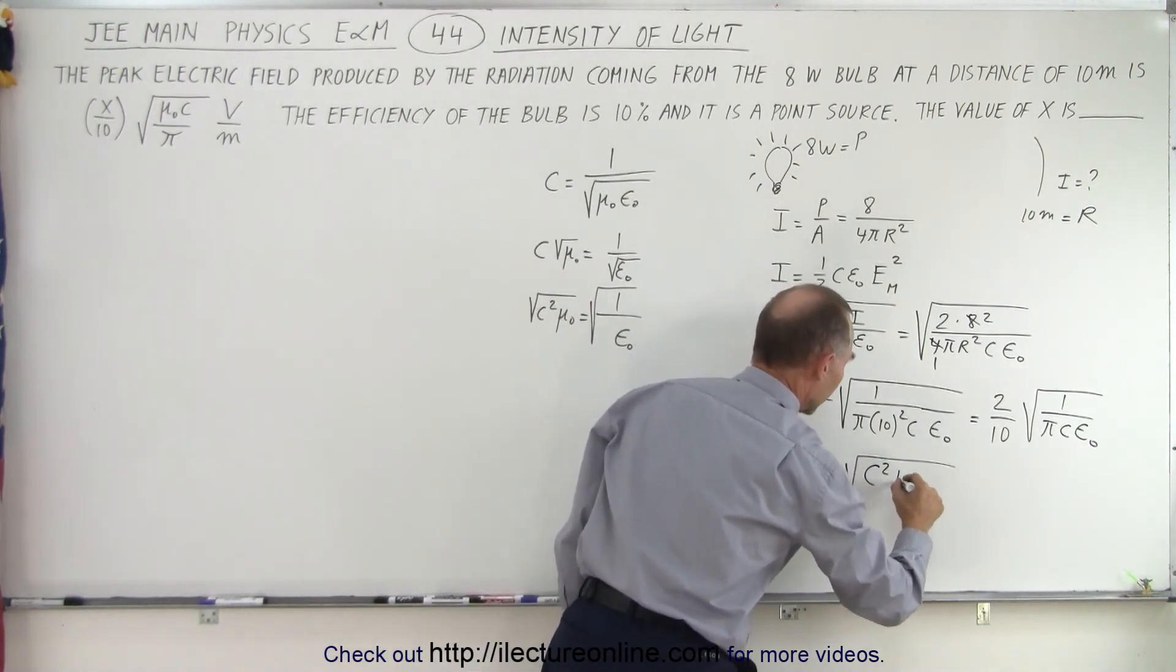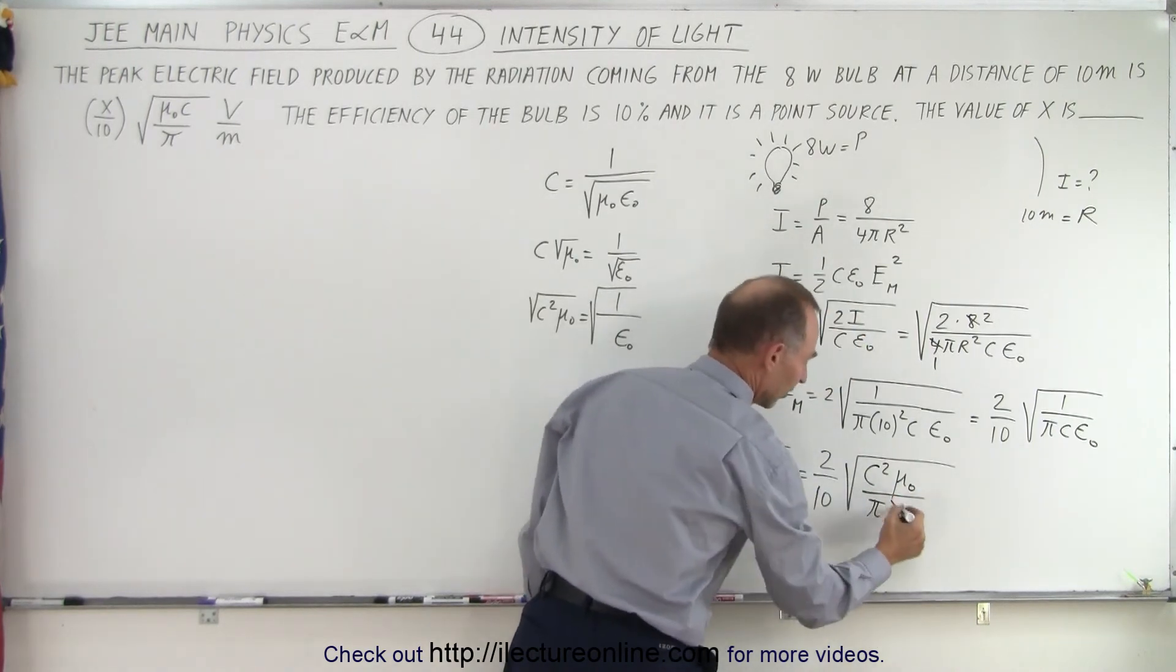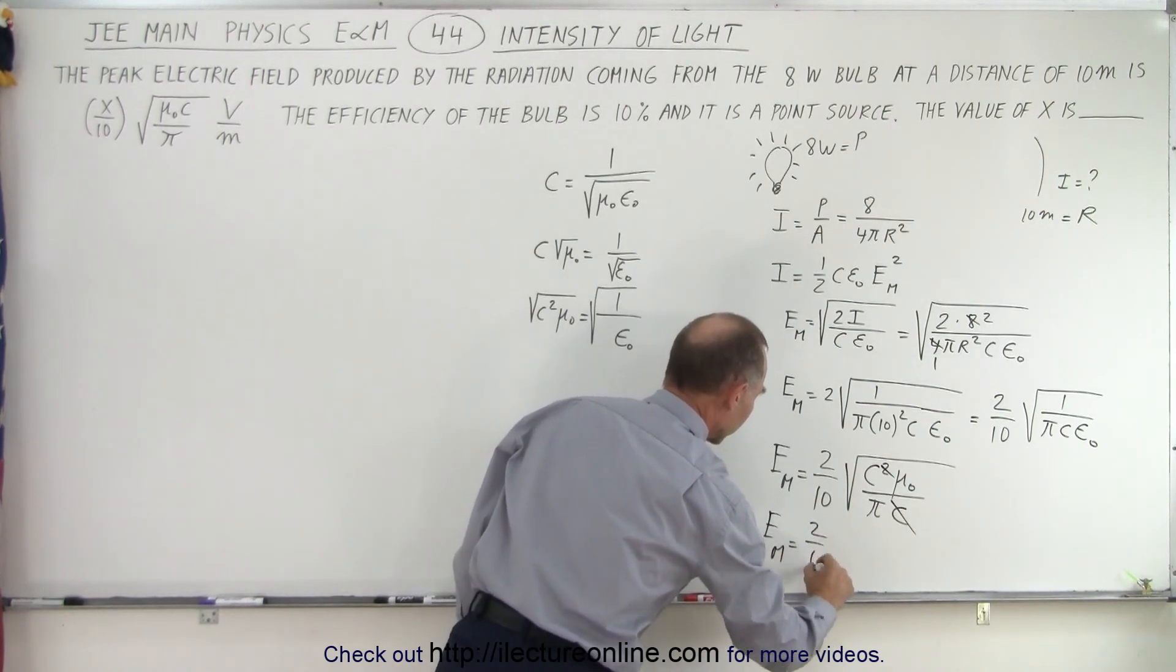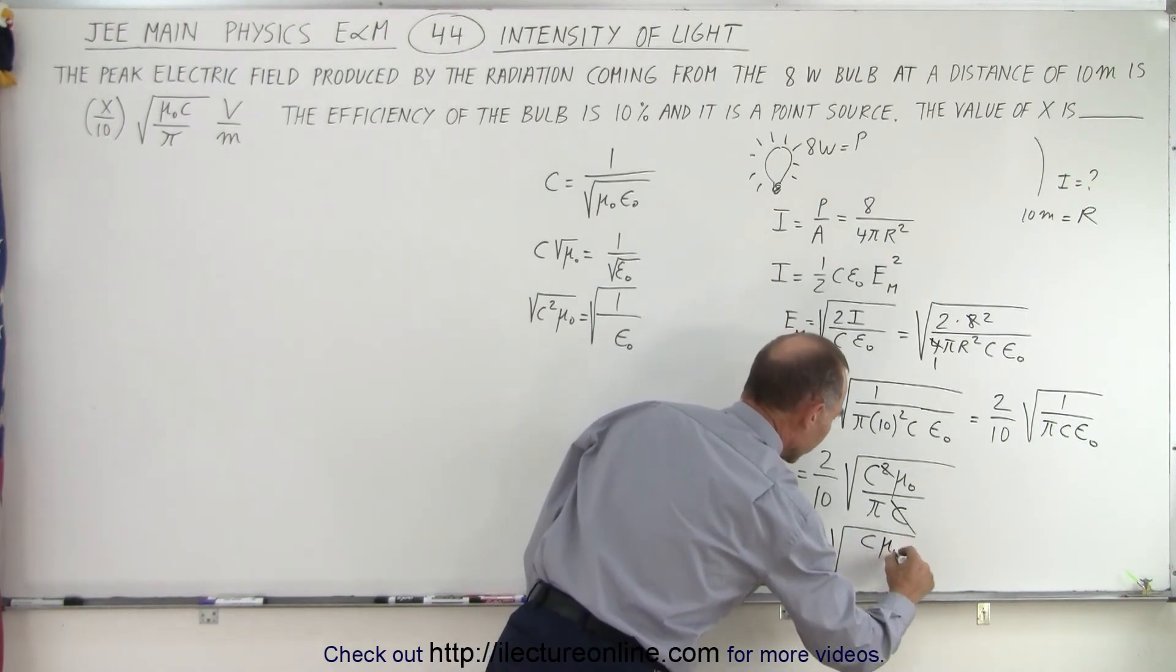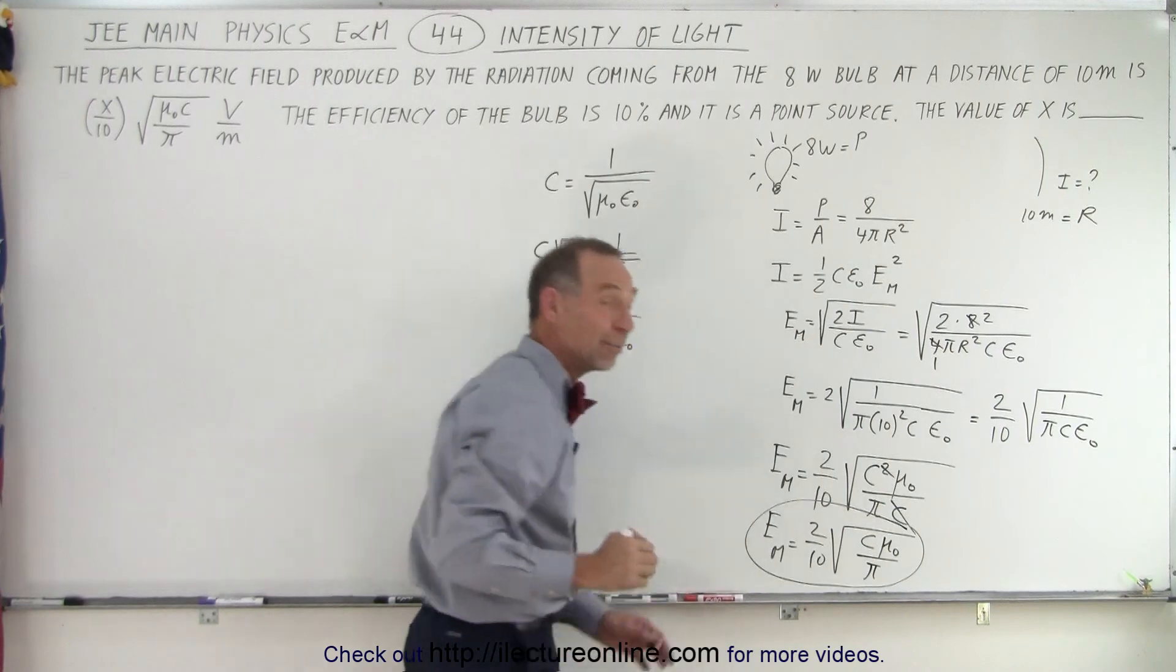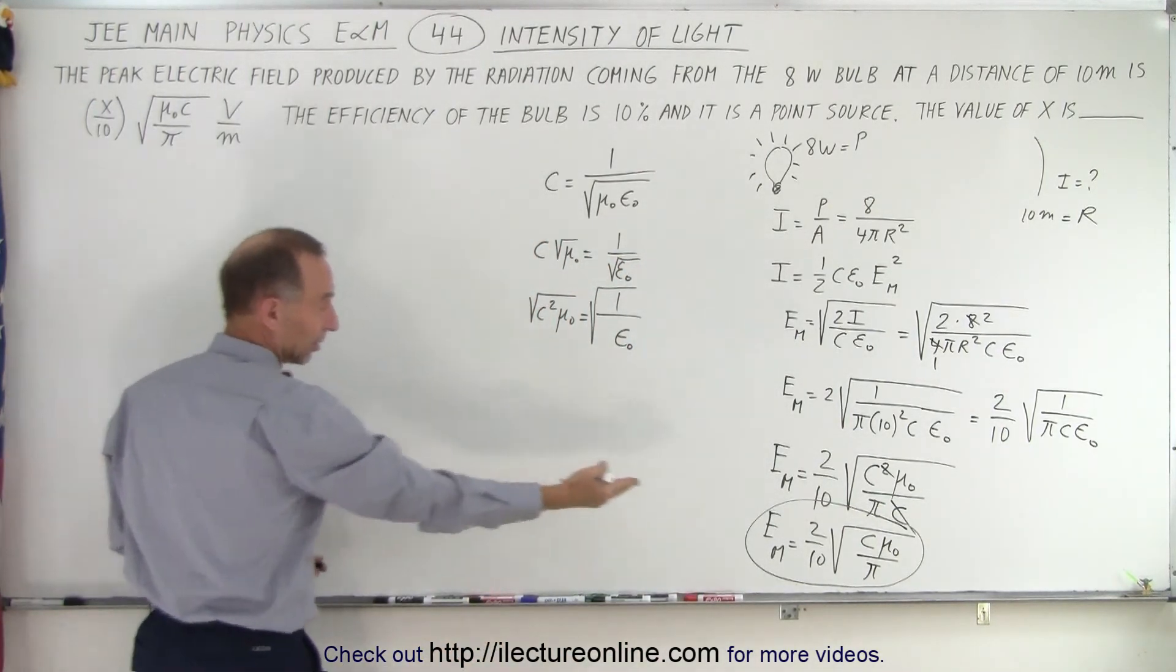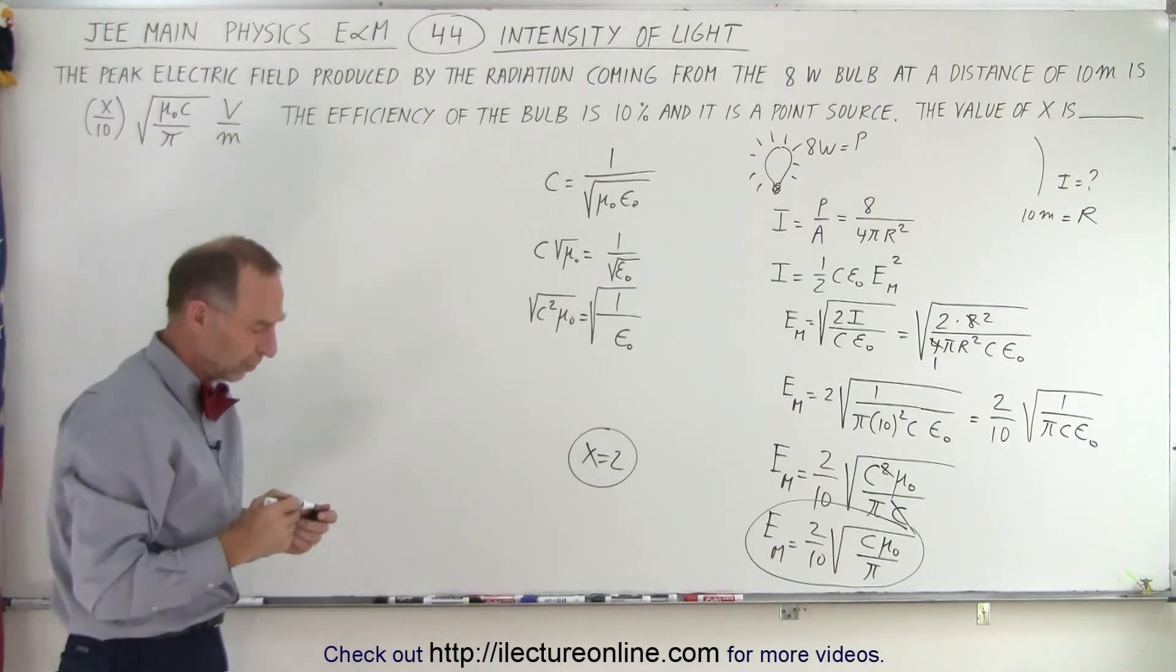And then of course this c cancels that c, and we have the maximum field intensity is equal to 2 over 10 times the square root of c mu sub naught over pi, and that is the same format that I see here. And of course in that case I can simply look at that and go x equals 2, and that was the answer that was given to us.